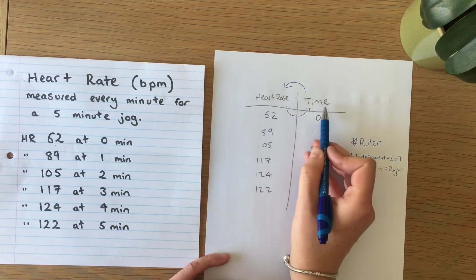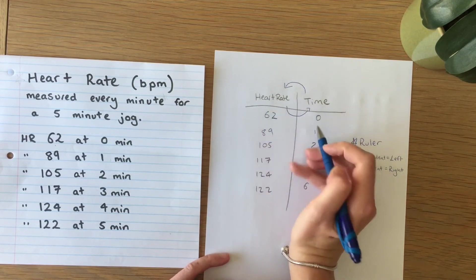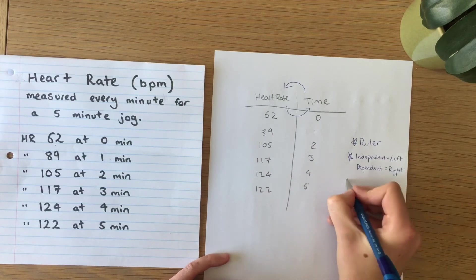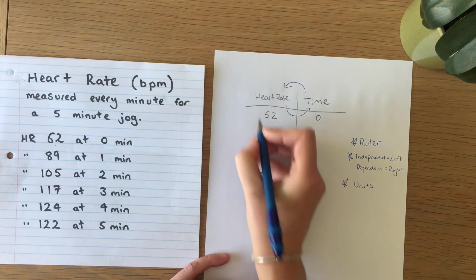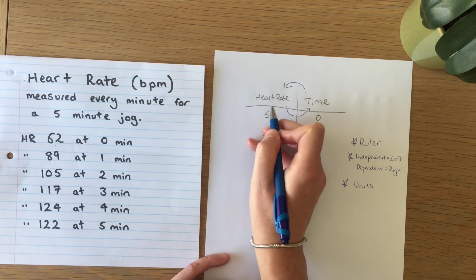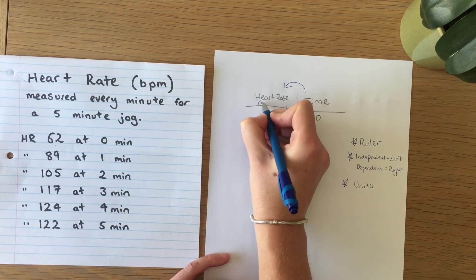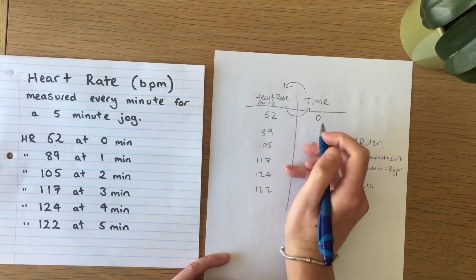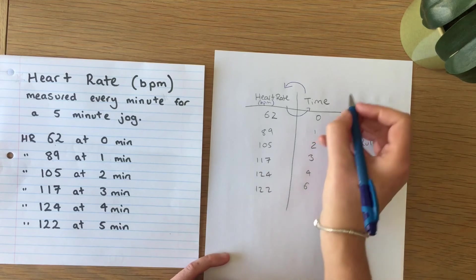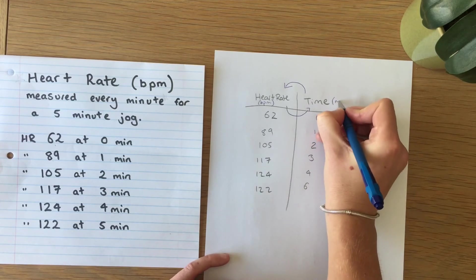We're also missing units from the top rows of our columns so we need to make sure that the units are included. So for example for heart rate you would have beats per minute, but obviously it would be in the dependent variable column and for time it would be minutes.